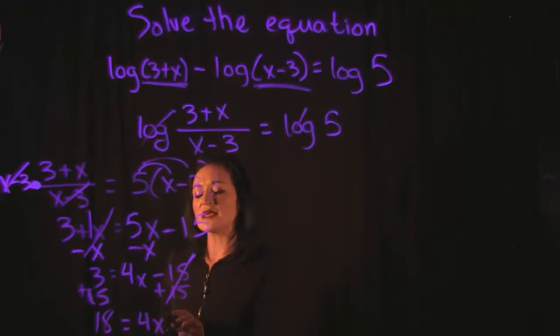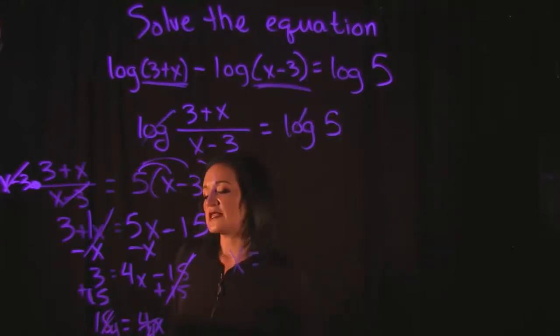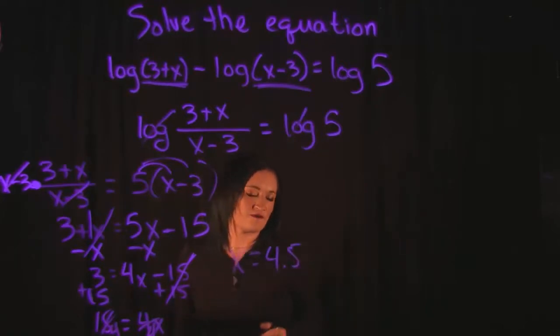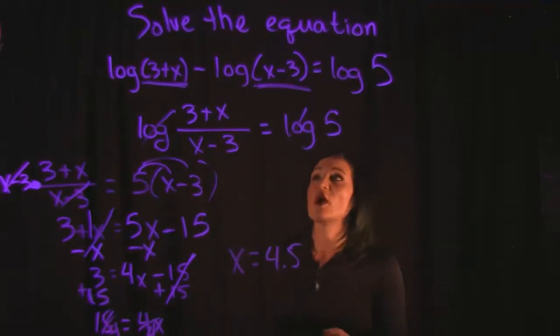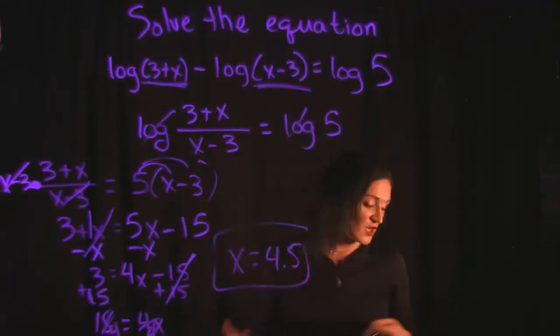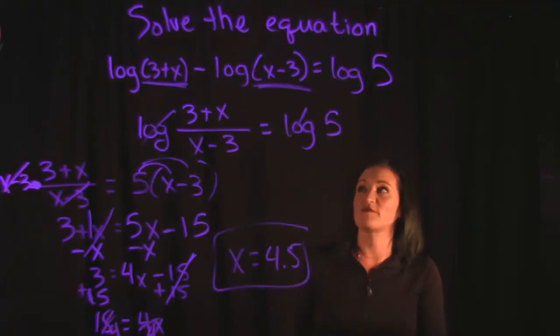The only thing left to do here to solve for X is to divide out the coefficient. So if we divide both sides by 4, we actually get that X is equal to 4.5 when we do that division there. So that actually solves the equation for us. X is equal to 4.5, and that wraps up this problem.